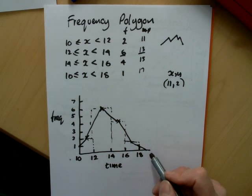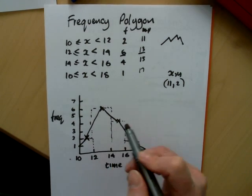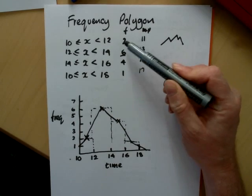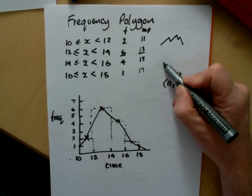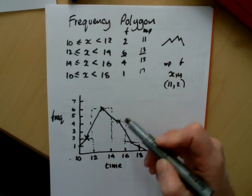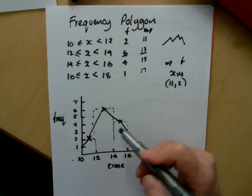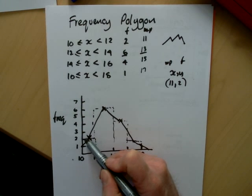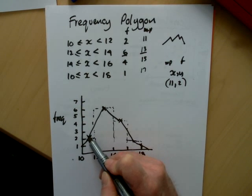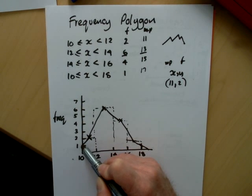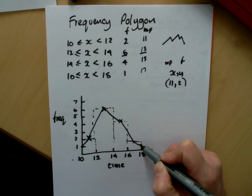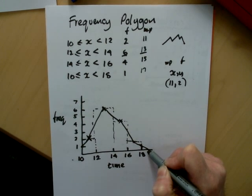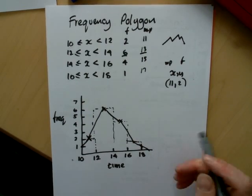So that is frequency polygons. Just to recap, plot the midpoints against the frequency. The midpoints of your x, the frequency is your y. Draw your points together. The points at the end, imagine there was a bar there and connect to the halfway point of that bar. Here, connect at the halfway point and then let it run through to the axis. And that's how to draw frequency polygons.